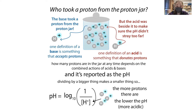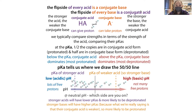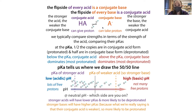So an acid donates and a base takes. Every acid has a conjugate base, and every base has a conjugate acid. When you have an acid, it can give a proton, but once it gives a proton it becomes the conjugate base. A really strong acid — something that really wants to give up a proton — is not going to want to take that proton back, so you'll have a weaker conjugate base. Conversely, a strong base that really wants to take a proton will have a conjugate acid that doesn't want to give it up, making it a weak acid.